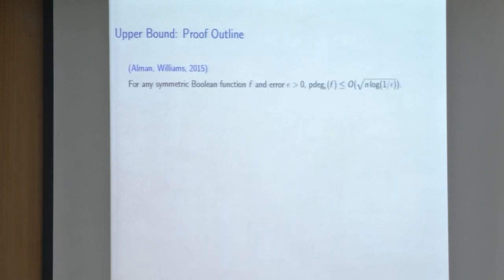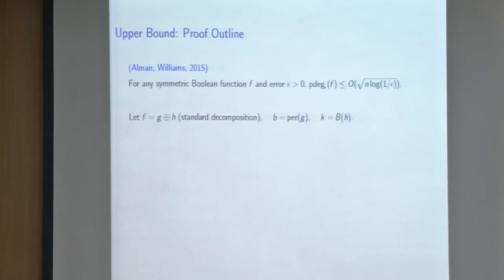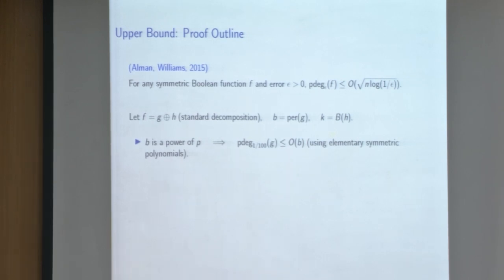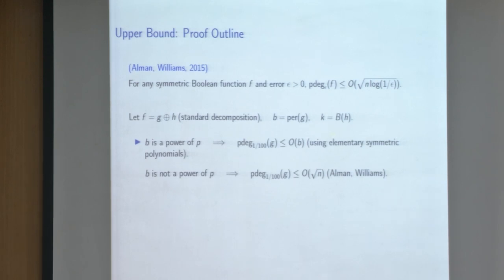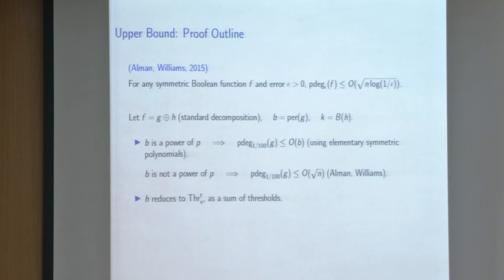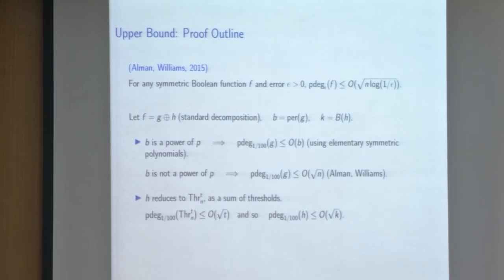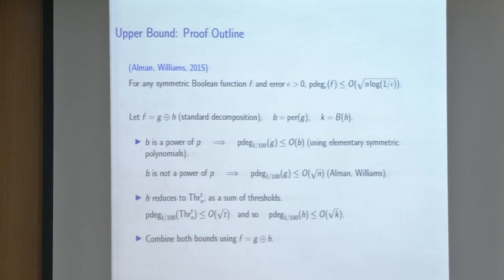For upper bounds, we start from the Allman-Williams bound: for any symmetric Boolean function f and error ε, the probabilistic degree is O(√n · log(1/ε)). In the standard decomposition, if b is a power of p, we write g as a polynomial in elementary symmetric polynomials and conclude probabilistic degree at most O(b); otherwise we just use Allman-Williams. For h, it reduces to a sum of thresholds. Since the probabilistic degree for thresholds is O(√t), we get probabilistic degree O(√k) for h, and combining both gives the full upper bound construction.